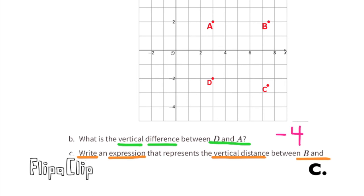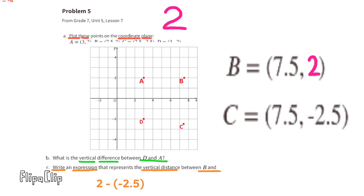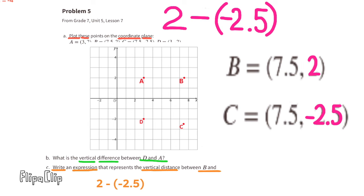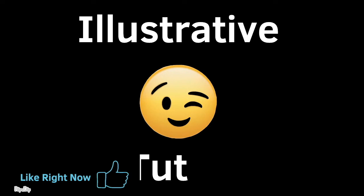Part c: write an expression that represents the vertical distance between point B and point C. The y-value for B is 2, and we're finding the vertical difference between B and C, so this is a subtraction problem. The expression is 2 minus negative 2.5. Be sure to support my YouTube channel by liking this video, leaving a comment, and subscribing. Thanks for watching!